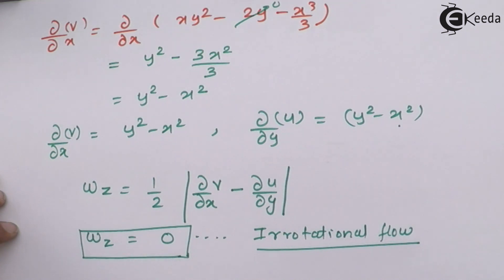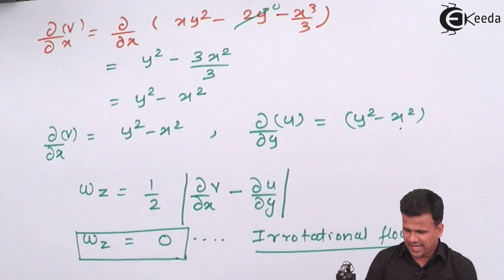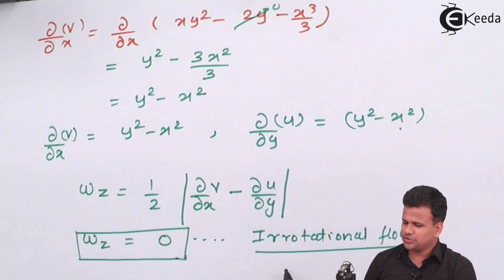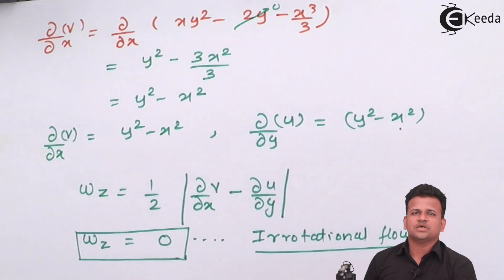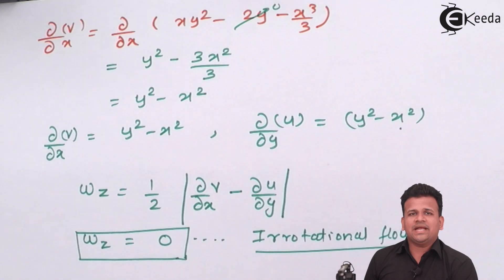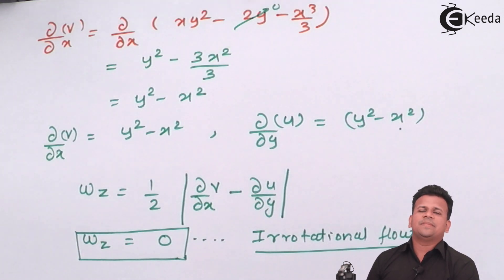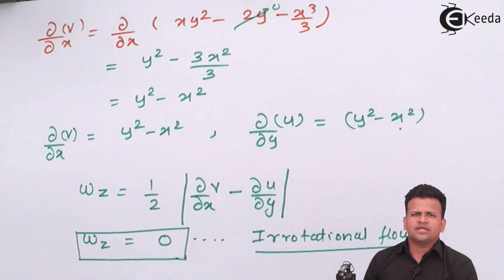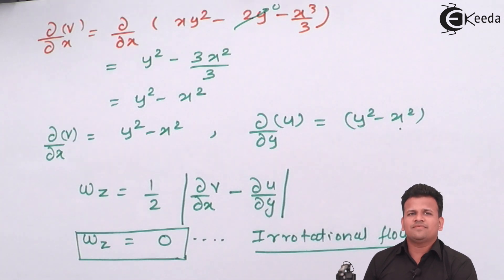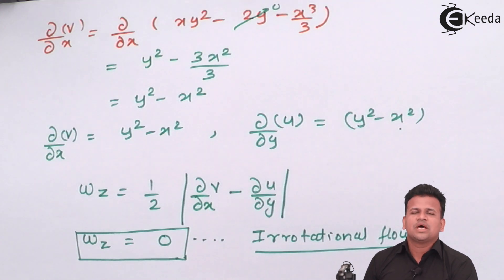So we have got omega Z equals 0, which means it is an irrotational flow. In this problem we have seen that whether the fluid will be flowing or not is confirmed by the continuity equation, and whether the flow is rotational or irrotational is confirmed by the equations for omega Z, omega X, and omega Y. I hope you have understood how to solve problems on rotational flow and irrotational flow. Thank you.